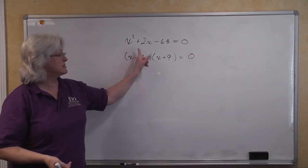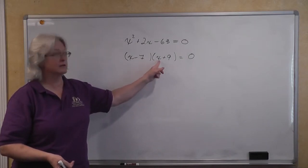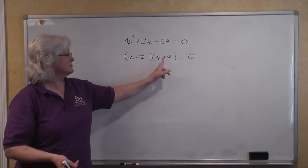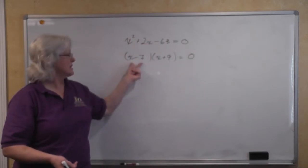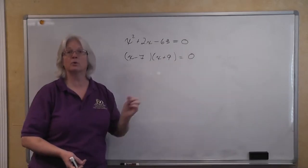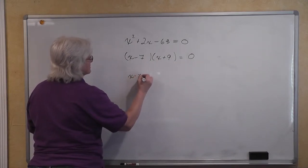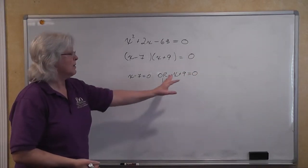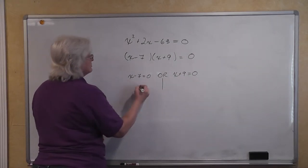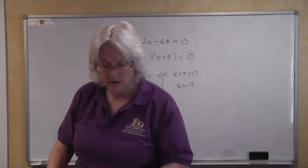We can check this by FOILing it: x times x is x squared; x times 9 is positive 9x; negative 7 times x is negative 7x, giving a sum of positive 2x; negative 7 times positive 9 gives negative 63. So we now have a product of two factors equal to zero. The zero product property tells us that either x minus 7 equals zero or x plus 9 equals zero. Solving, x equals 7 or x equals negative 9.